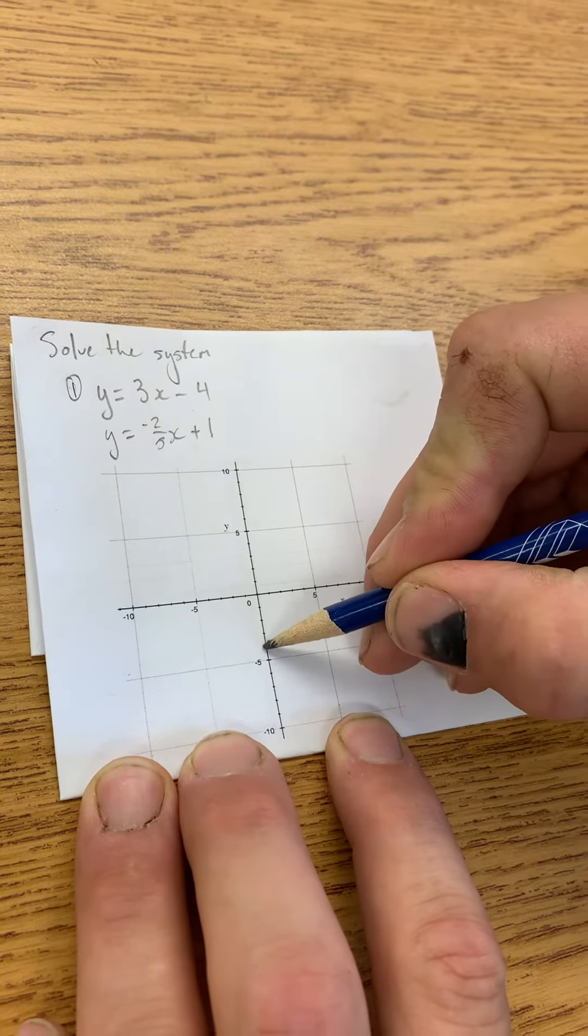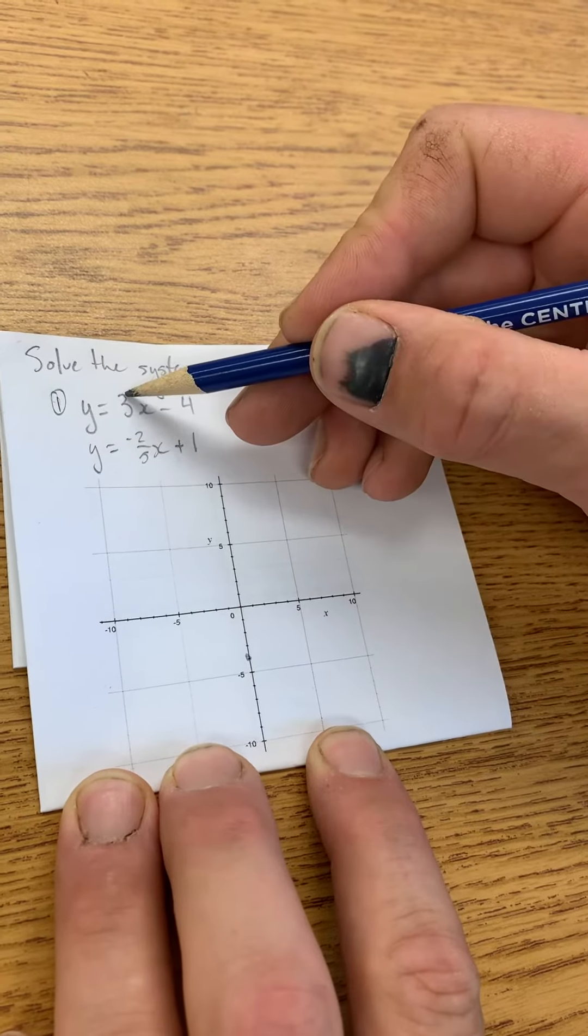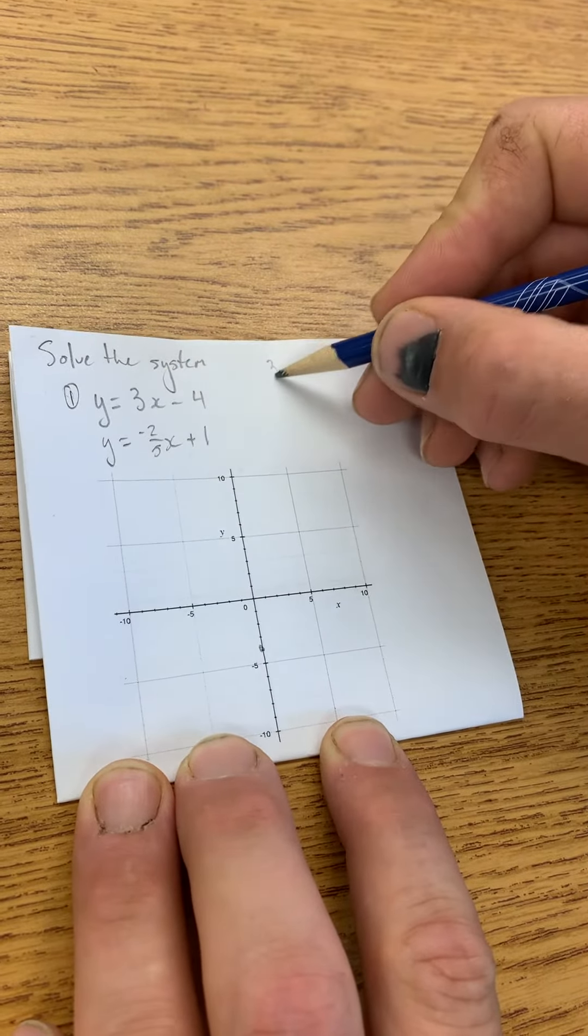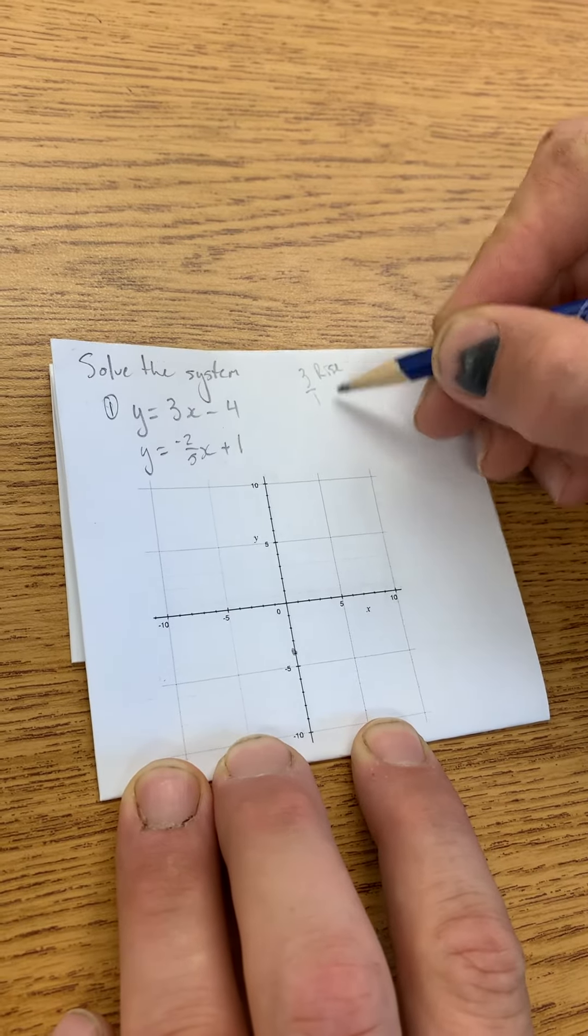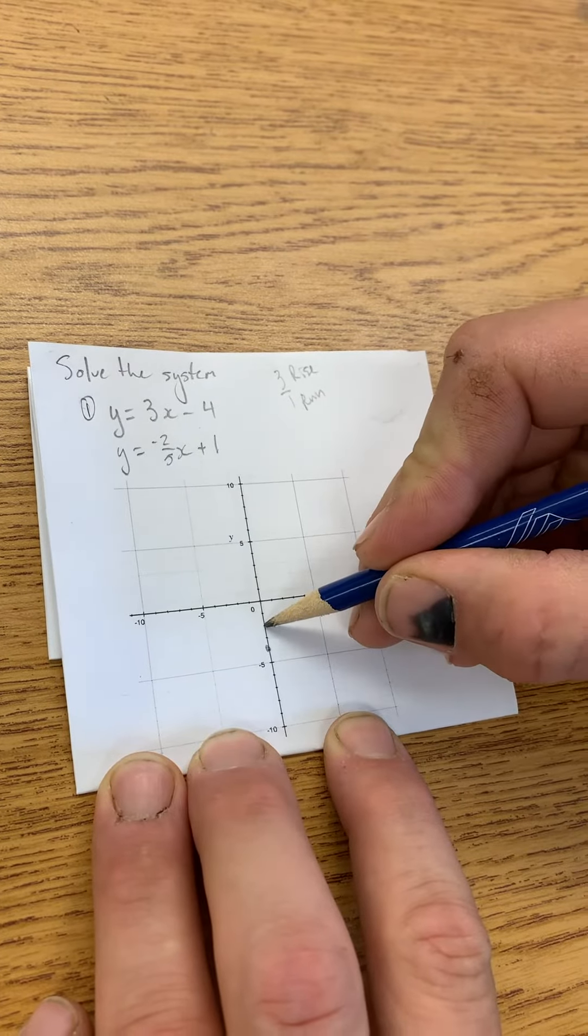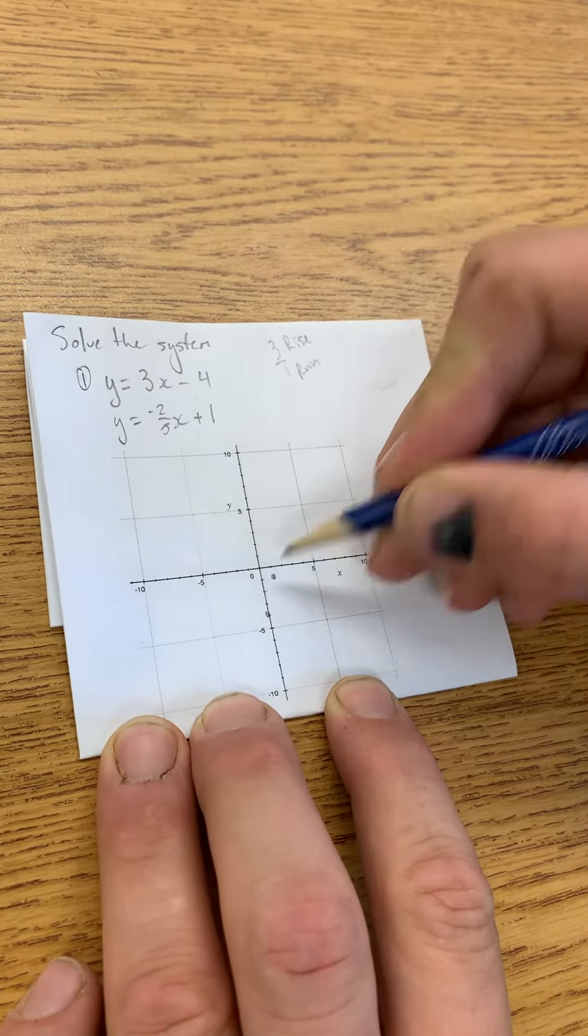So we start at its y-intercept. That's negative 4. Then we use its slope of 3, which remember, 3 is actually 3 over 1. So we have a rise of 3 and a run of 1. So we'll go up 3 and over 1. That'll make a point.